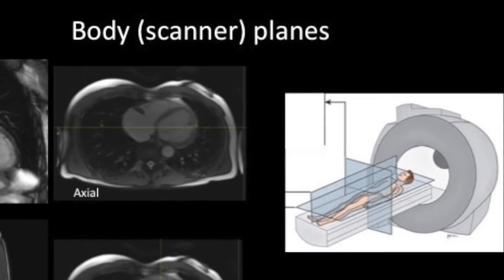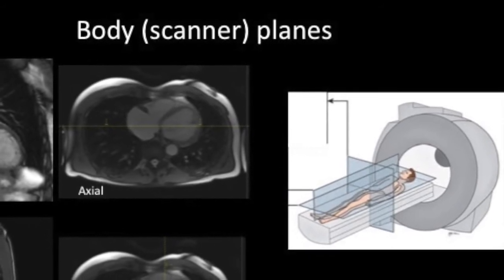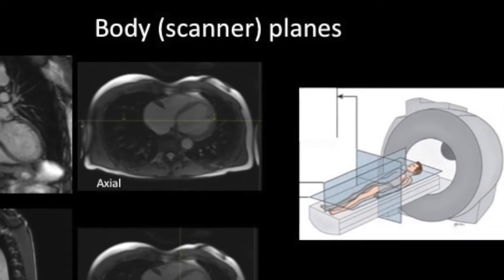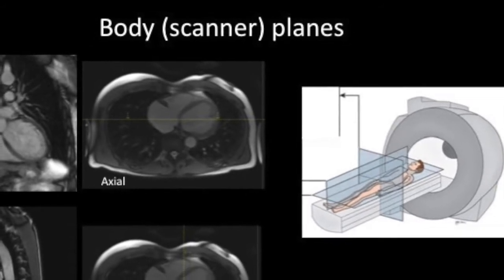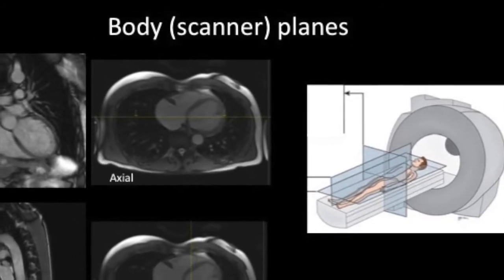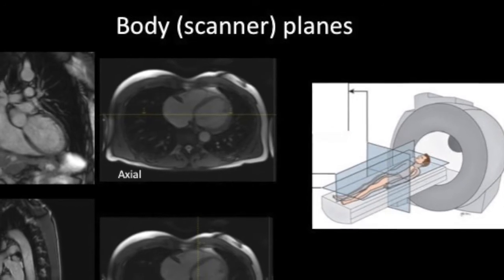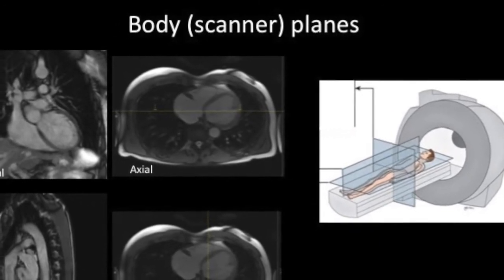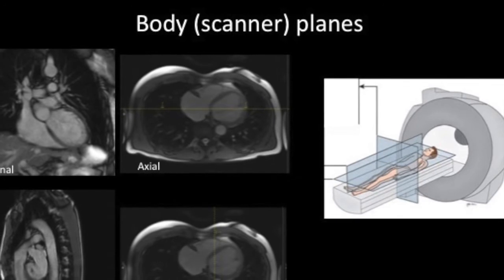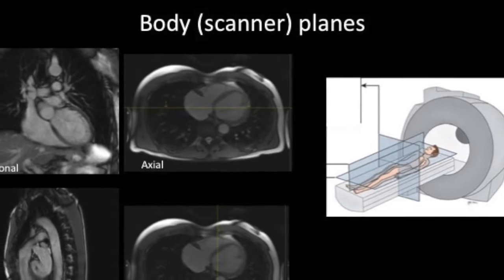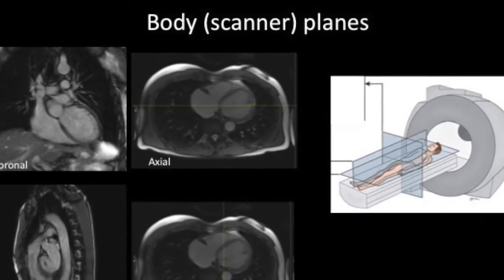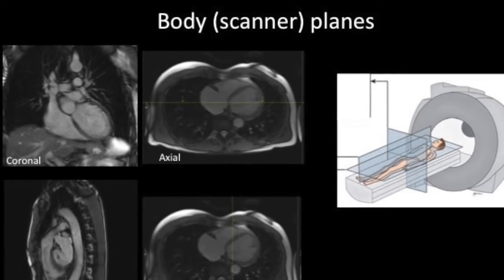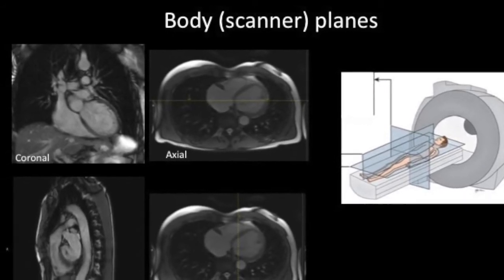The two main coordinate systems used for cardiac MRI include the body or scanner planes and the cardiac planes. Body planes are oriented orthogonal to the long axis of the body and consist of axial, sagittal, and coronal planes. These planes are used to derive the scout images and provide a qualitative overview of cardiac morphology.